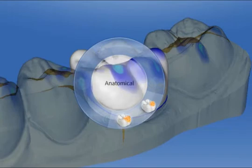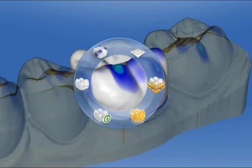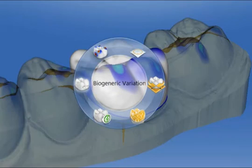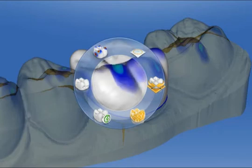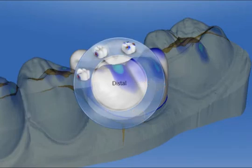On the left beside this is the Recalculate tool. Above this is the Biogeneric Variation tool that allows customization of the biogeneric morphology. Above this again is the Contact tool for distal, mesial, and occlusal modifications.